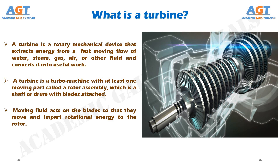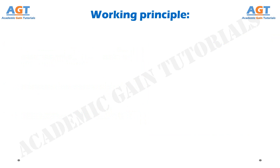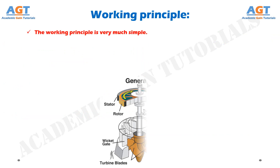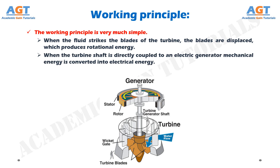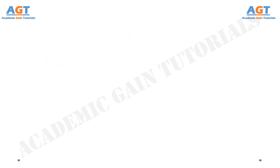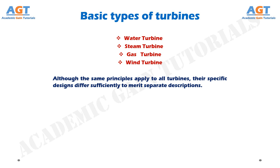The working principle of a turbine is very simple. When the fluid strikes the blades of the turbine, the blades are displaced, which produces rotational energy. When the turbine shaft is directly coupled to an electric generator, mechanical energy is converted into electrical energy, known as hydroelectric power. The basic types of turbines are water turbines, steam turbines, gas turbines, and wind turbines. Although the same principles apply to all turbines, their specific designs differ sufficiently to merit separate descriptions.